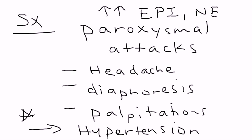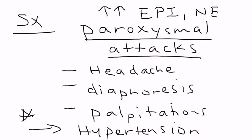What distinguishes this from any other case of high blood pressure is that the high blood pressure comes and goes. Blood pressure is completely normal, and then all of a sudden it spikes up really high, causing headaches and all these other symptoms. These attacks can last up to 15 minutes. When the patient describes this to a physician, it's a very unique history — paroxysmal attacks that are not constant; they come and go.